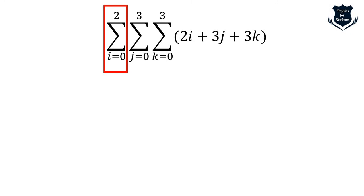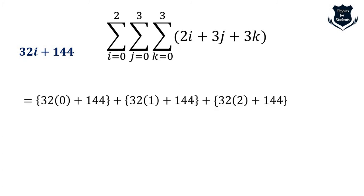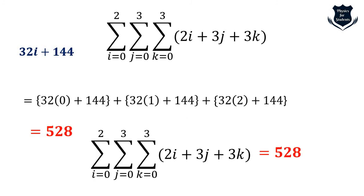With k done and j done, we now substitute into the outermost sigma i=0 to 2. The expression 32i + 144 is used: keeping 144 constant and varying i as 0, 1, 2, we compute and get 528. Simple — just a cakewalk. That is the answer for this triple summation problem.